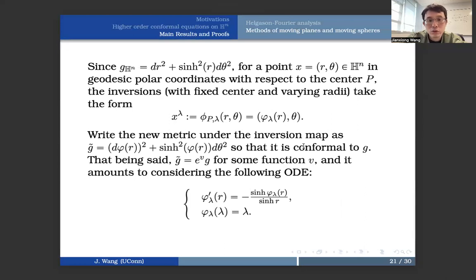And this Kelvin transform U lambda is just going to be defined in terms of the inversion with respect to the sphere. So now let's look at what do we do on hyperbolic spaces. So now on hyperbolic space, we have the metric G HN can be written as dr squared plus sinh r squared d theta squared, for a chosen point x equals r comma theta in geodesic polar coordinates with respect to a center P. So the inversion will take the form x lambda defined as phi lambda of r comma theta. You keep the theta and change the radius.